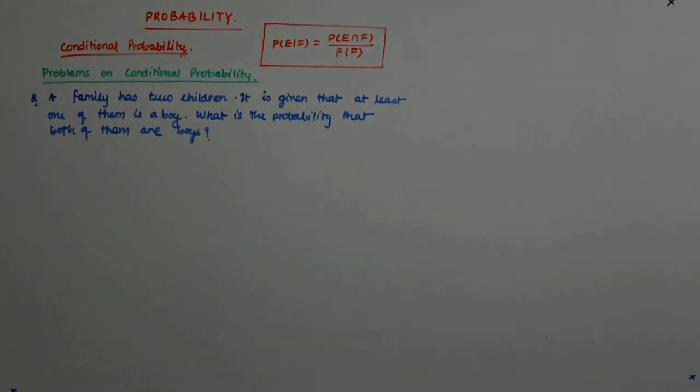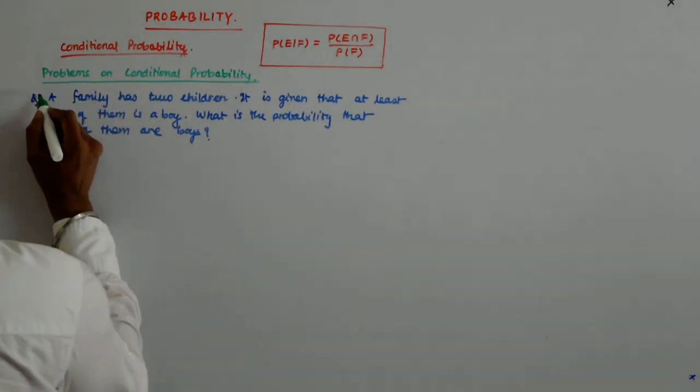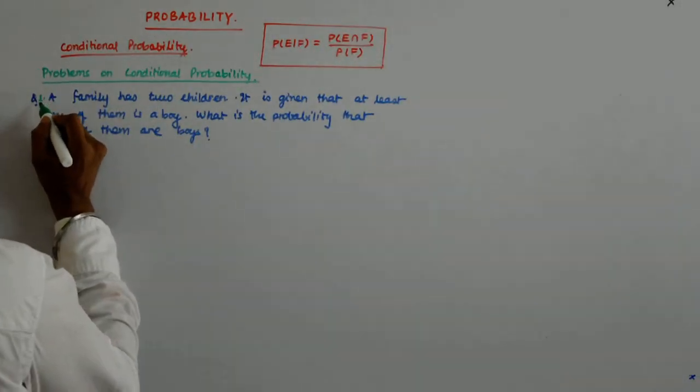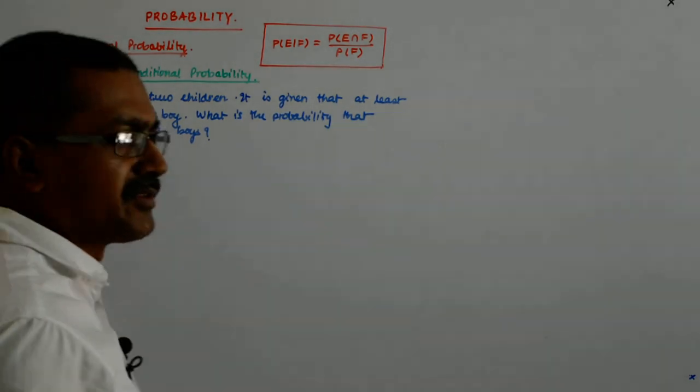The problem is a family has two children. Question 1: It is given that at least one of them is a boy. What is the probability that both of them are boys?